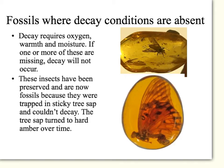That's why things like pickling work. Most things aren't pickled to cause fossils to form, but there are some examples where oxygen, warmth, or moisture — or a combination — are missing, meaning decay won't occur. These insects preserved in amber are really lovely examples, and people buy them as ornaments or even as jewelry. Amber is the sticky tree sap that oozed out of a tree millions of years ago, and an insect became caught inside it. Because there's no oxygen and no moisture in there, it stayed preserved as the tree sap hardened over time.